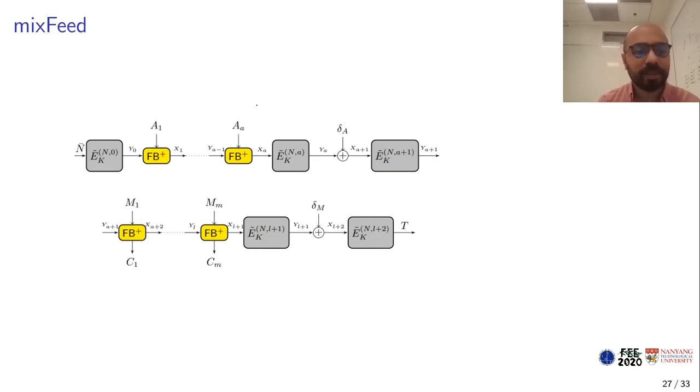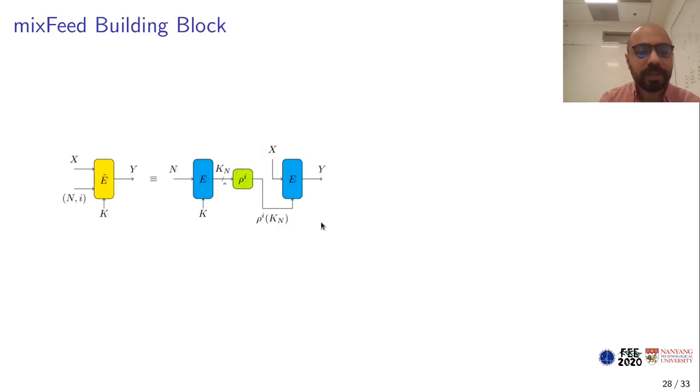We move on now to mixFeed. mixFeed is a similar mode, very similar. Its analysis is based on tweakable block cipher. So we have a tweakable block cipher which takes secret key and nonce and a block index. Then the feedback part is very similar; the details of the function are a bit different. You can refer to the paper to see how it operates, but we skip it here for simplicity. Another difference is that the control bits are added to the state and not to the key, but again, this has no effect on the attack. Here is the tweakable block cipher used. It essentially takes n, k and outputs kn. For block i, it operates a permutation ρ i times over kn.